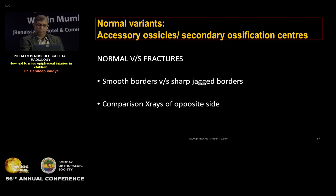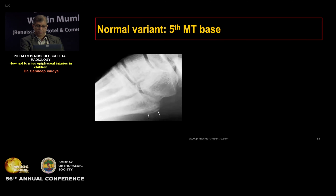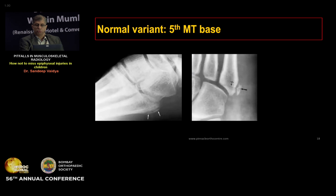The third pitfall is inability to appreciate normal variants. The pediatric skeleton is replete with accessory ossicles and secondary ossification centers which are often misinterpreted as fractures. Normal variants have smooth borders, as opposed to the sharp jagged borders of a fracture. Comparison X-rays of the opposite side help, since normal variants are very often bilateral. One common area of misdiagnosis is the base of the fifth metatarsal, where the secondary ossification center is misdiagnosed as a fracture. The key difference: the ossification center lies along the long axis of the fifth metatarsal, whereas the fracture line is always transverse.